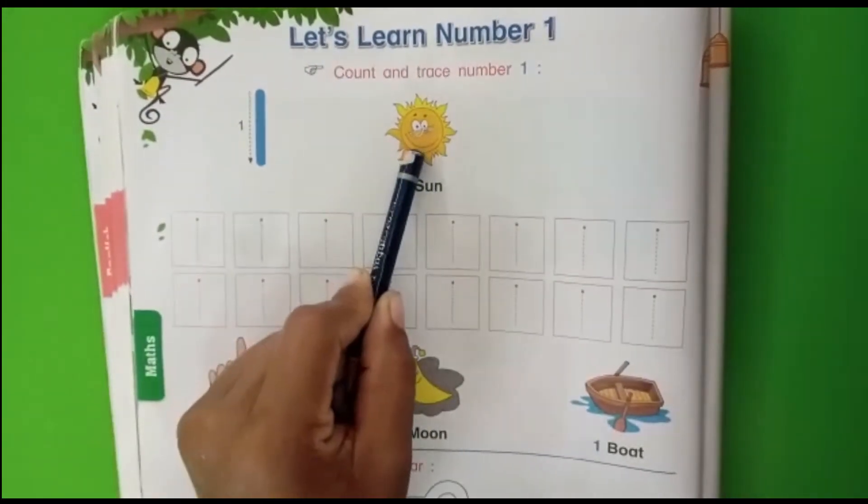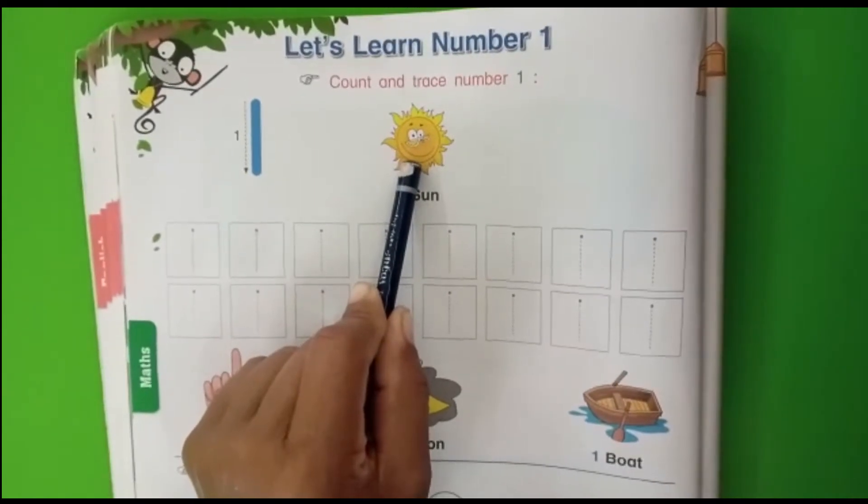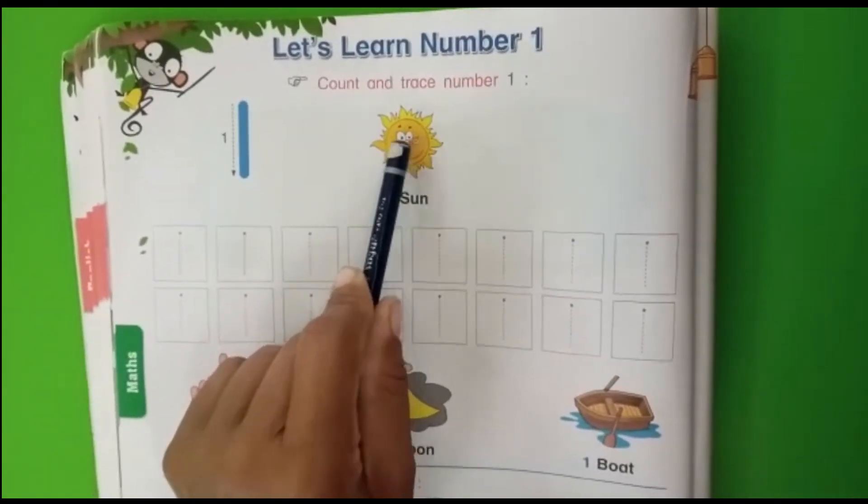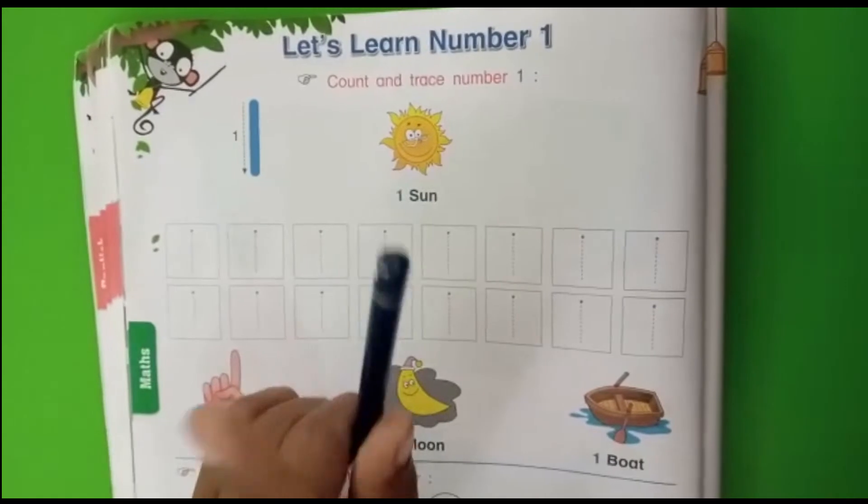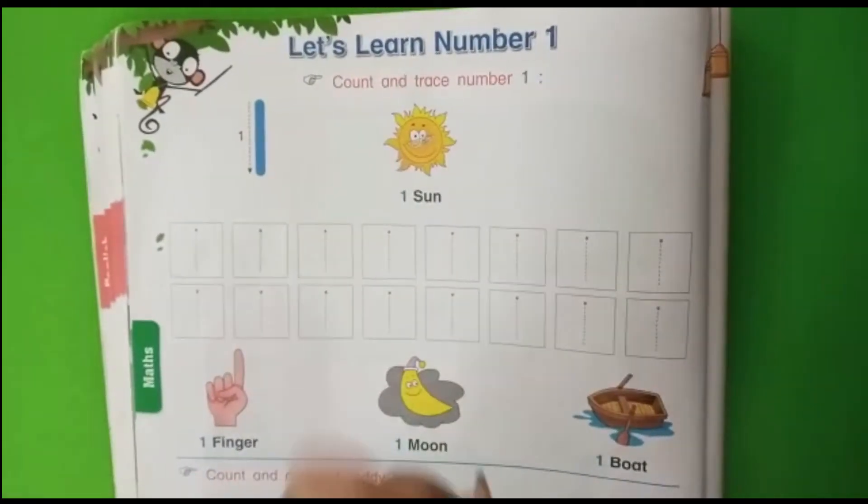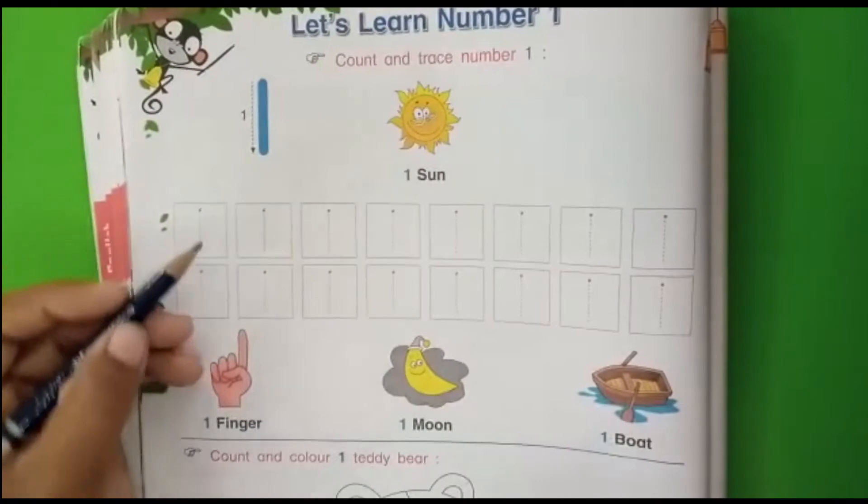Now see here. Which is this picture? Sun. How many sun? 1.